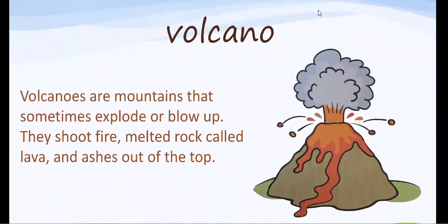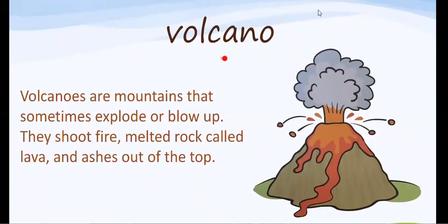Our next word is volcano. Volcanoes are mountains that sometimes explode or blow up. They shoot fire, melted rock called lava, and ashes out of the top. That is a volcano here — what is coming up is the fire, the melted rock, and this red stuff is the lava coming out of the volcano. Let's say volcano together: volcano.